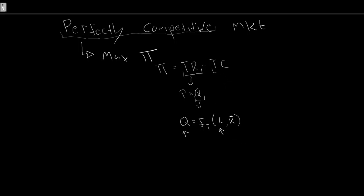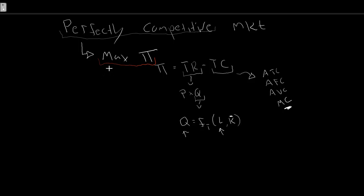From there, we jumped over to our total cost curves and looked at our cost functions. Altogether, we took a look at the relationship between average total cost, average fixed cost, and average variable cost. And finally, our marginal cost, which is going to be the big one. Firms exist to maximize their profit, and they will do so in the margin — in those incremental changes.